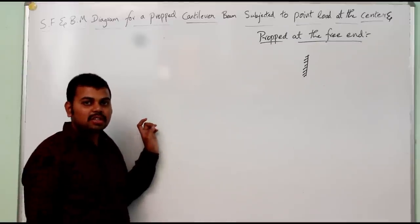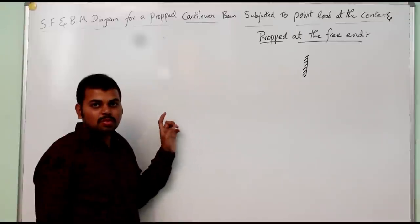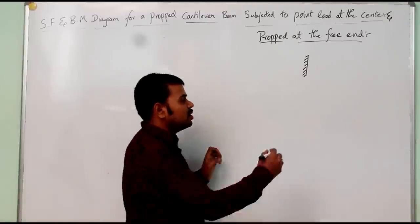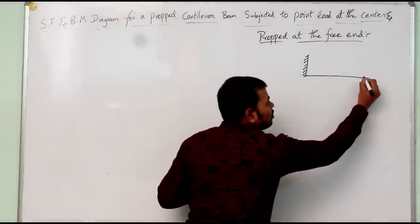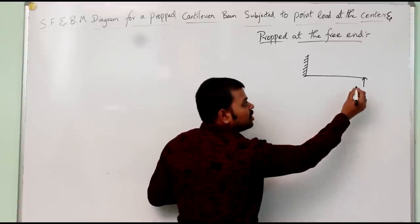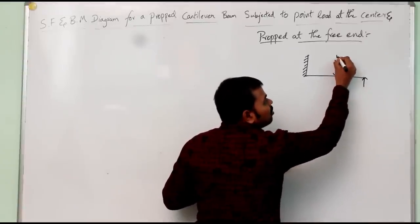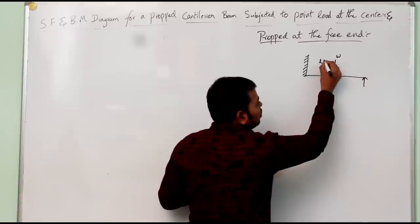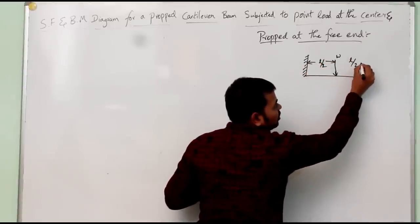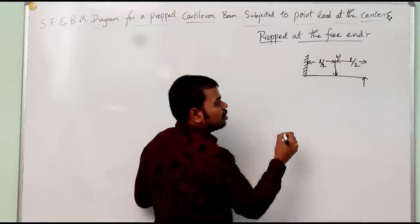We will discuss the shear force and bending moment diagram for a cantilever beam subjected to a point load at the center and a prop at the free end. The cantilever beam has a prop at the free end and is subjected to a point load at a distance of L/2 from the fixed end and L/2 from the free end.